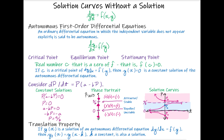A lot of times when we've solved for zeros before — say in algebra or in calculus — we've been using the independent variable as what we were plugging in, and this results in behaviors that we observe along the horizontal or x-axis. Since we're talking about zeros of a function in terms of y, this is going to result in behaviors that we see along the vertical axis.